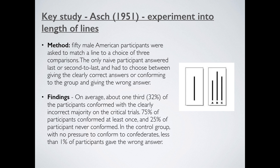What does Asch find? On average, about a third of participants conformed on the critical trials — the ones where the confederates gave the wrong answer. A third of people give the blatantly wrong answer so they don't look like a fool. That's incredible. 75% of participants conformed at least once, and only a quarter of them never conformed. That means a majority of people will give the wrong answer to avoid looking foolish in front of the group. In the control group with no pressure from confederates, less than 1% of participants gave the wrong answer — so clearly it's just the group influencing them.